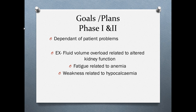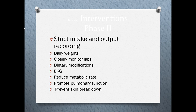The goals and plans depend on the patient problem. For example: fluid volume excess related to altered kidney function, fatigue related to anemia, or weakness related to hypocalcemia. Nursing interventions include strict I's and O's, daily weights to monitor fluid volume status, and close lab monitoring. Dietary modifications include restricting potassium if elevated, restricting sodium because salt and water go together and we don't want to potentiate fluid volume overload, and decreasing potassium — potentially no potassium.